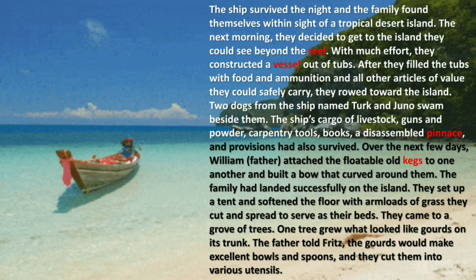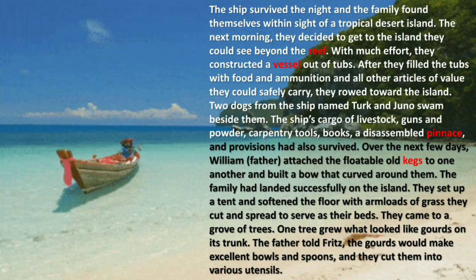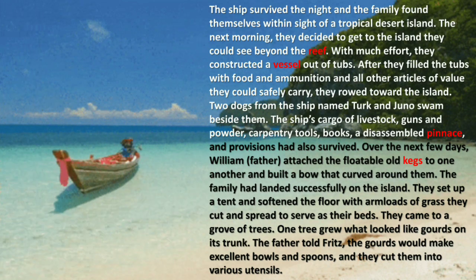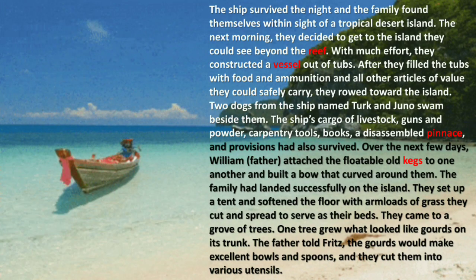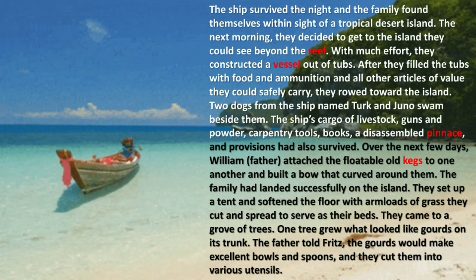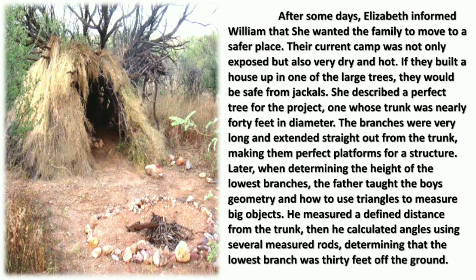They came to a grove of trees. One tree grew what looked like gourds on its trunk. The father told Fritz that the gourds would make excellent bowls and spoons. They cut them into various utensils so that they could eat from them, using the food they had brought from the ship.